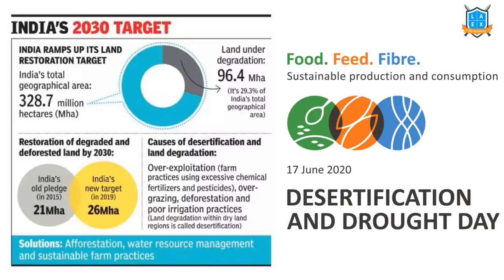Let us understand a few important facts regarding India's desertification. 29% of the total geographical area of India is under land degradation. We want to restore it. Initially in 2015 we said we are going to restore 21 million hectares of land by 2030. But recently, when UNCCD COP was held in India, we revised our target to restore 26 million hectares of land through afforestation, water resource management, and sustainable agricultural practices.